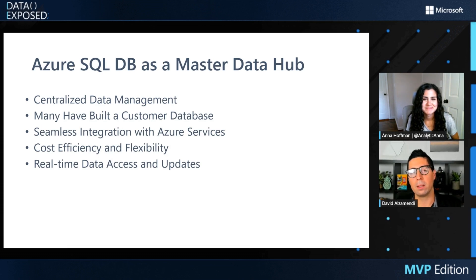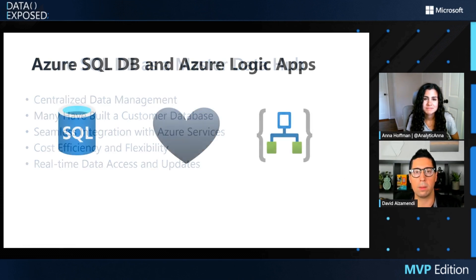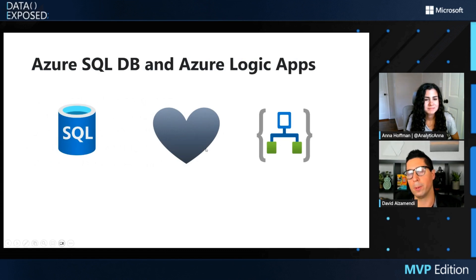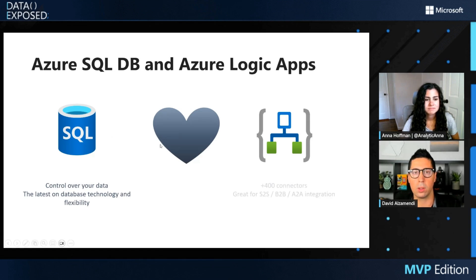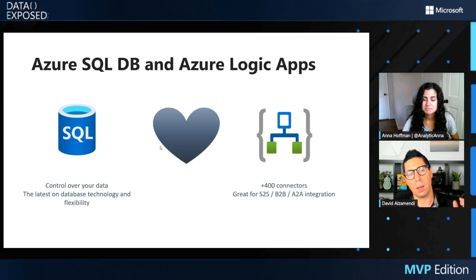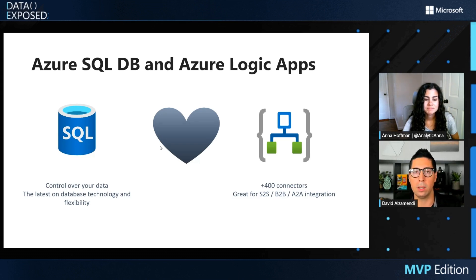Before, we had to tap into different tools for orchestrating data integration between systems, but with REST APIs and Azure Logic Apps, we now have a scenario we can cover entirely from Azure SQL DB. Many organizations are building customer databases, implementing master data management systems, or storing reference data — Azure SQL DB is great for that. On top of that, Azure Logic Apps has more than 400 connectors and can execute any REST API endpoint, meaning we can trigger Logic Apps to execute specific activities in different systems.